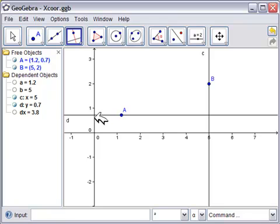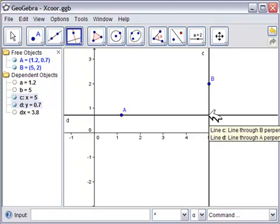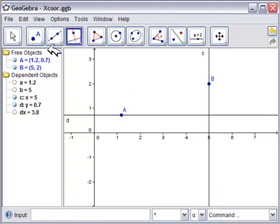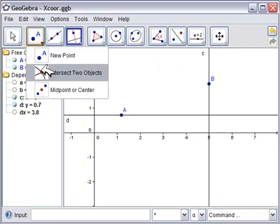And this 3.8 here, it says that this distance between A and this intersection point right here should be 3.8. Well, let's make an intersection point there, because GeoGebra doesn't understand things like that.